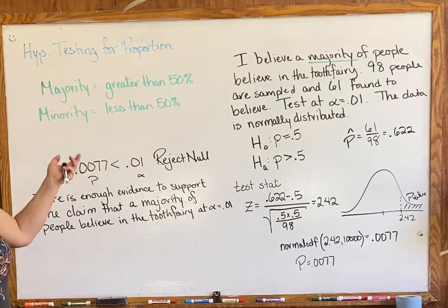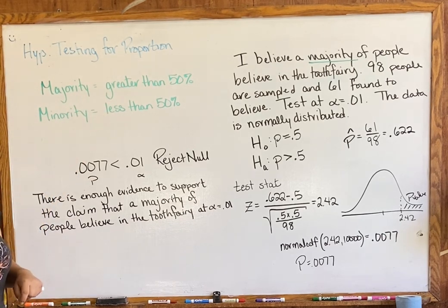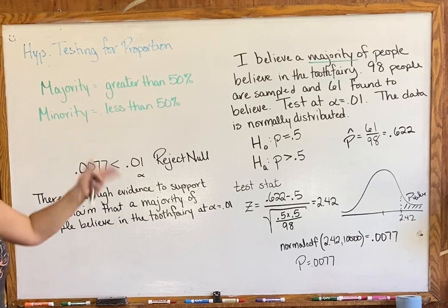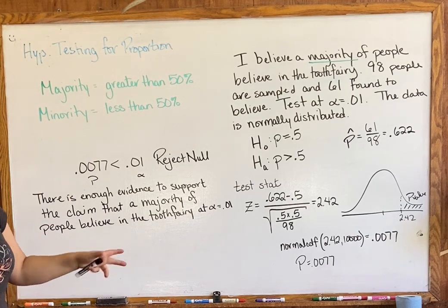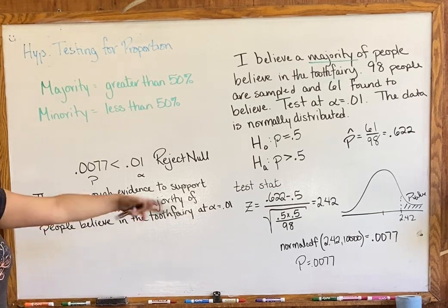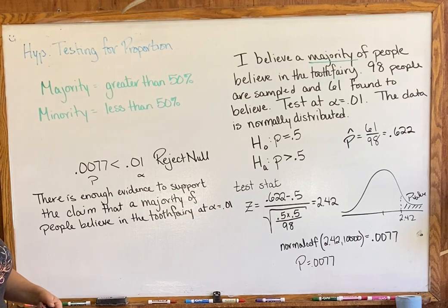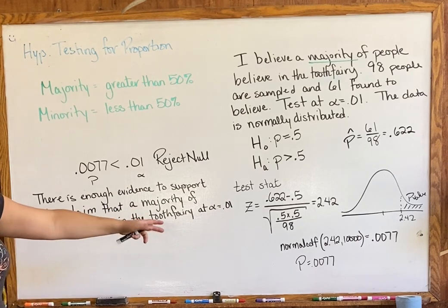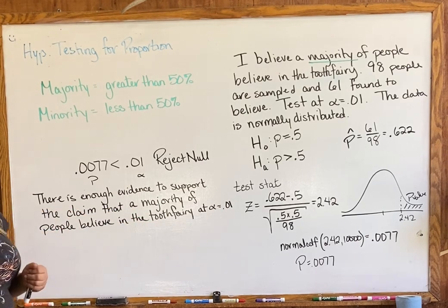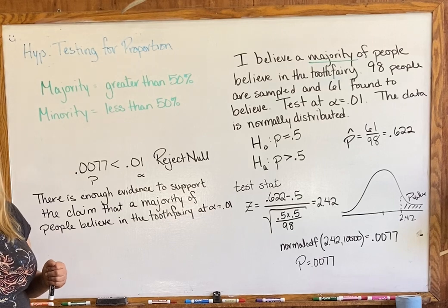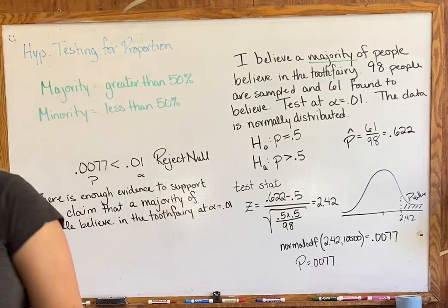We did two examples and saw some different wording, but the process is the same: use the Z-score formula for proportions, use normalcdf to find the p-value, and write your conclusion sentence. You should be good to go on proportions — I'll see you next time.